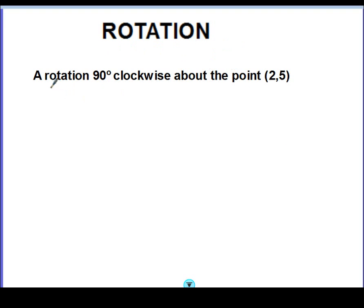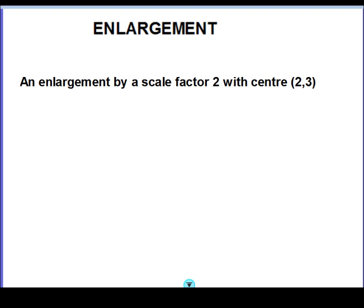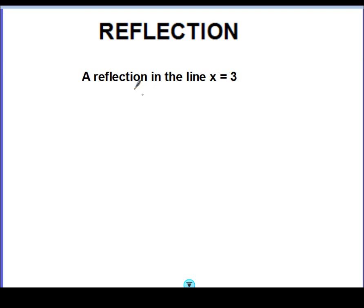For a rotation you must say it's a rotation, state by how much, state the direction, and give the centre of rotation. For an enlargement you must state that it's an enlargement, state the scale factor, and state the centre of enlargement. For a reflection you must say it's a reflection and give the line of reflection — commonly something like x equals a number, y equals a number, and occasionally y equals x or y equals minus x.